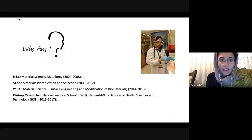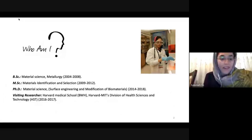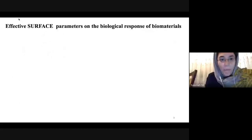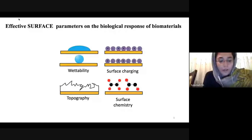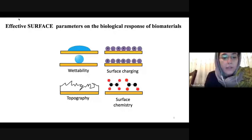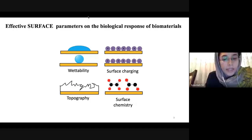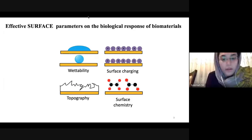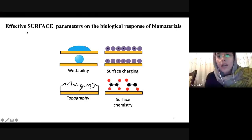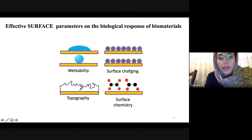Let me introduce myself briefly. I am a PhD in material science and I have worked on surface engineering and modification of biomaterials. As you know, when biomaterials are implanted in the body they are near the cells, so the surface properties of biomaterials can affect the cell response. The response of the host organism at the microscopic, cellular, and protein level to biomaterials is closely associated with the surface properties of the materials. The effective surface parameters include wettability, surface charging, topography, and surface chemistry.